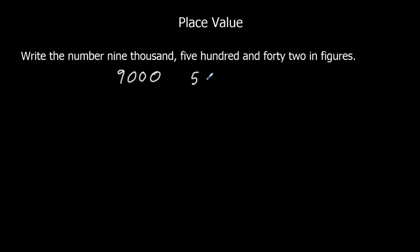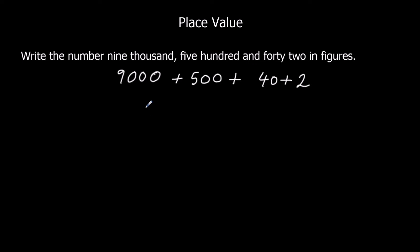500 is 5 with 2 zeros after it — ones, tens, then hundreds. We've got 40, which is 4,0. And we've got 2, which is just 2. So we're going to add these together and that will be our answer. So we've got 9000, five hundreds, and 40 and 2.